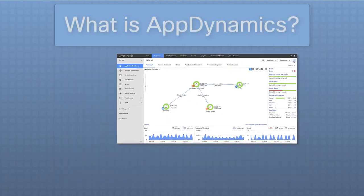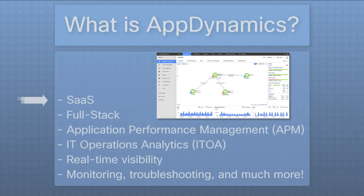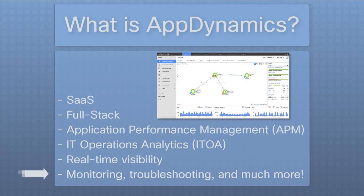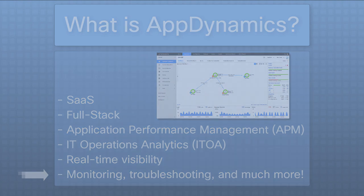AppDynamics is a software as a service which provides full-stack application performance management and IT operations analytics services. It offers real-time visibility into your applications, enabling performance monitoring, troubleshooting, and much more. It's a key tool for any DevOps team aiming to enhance efficiency and productivity.